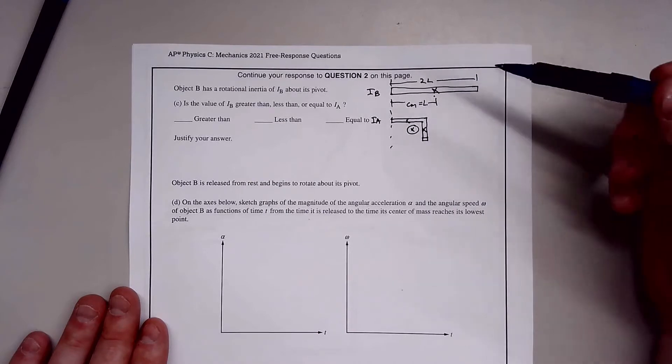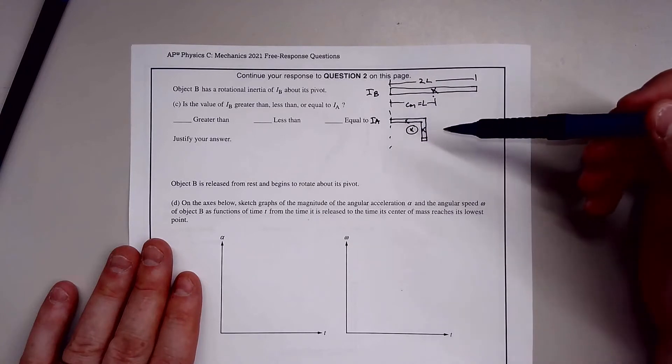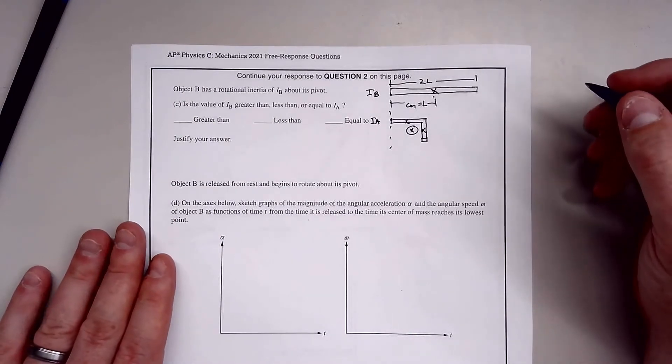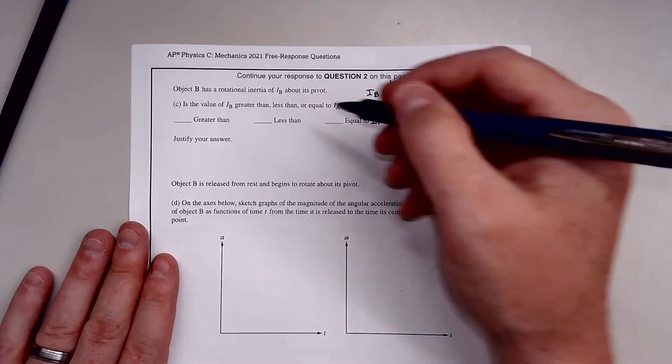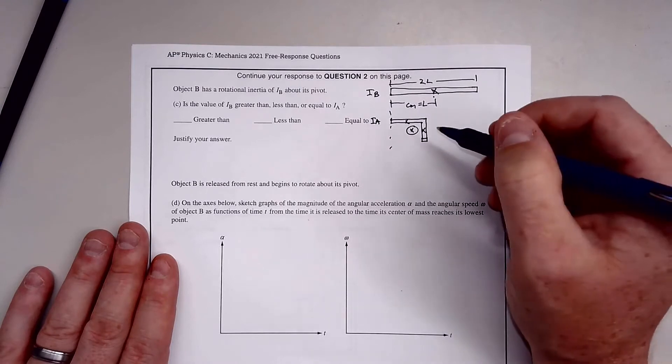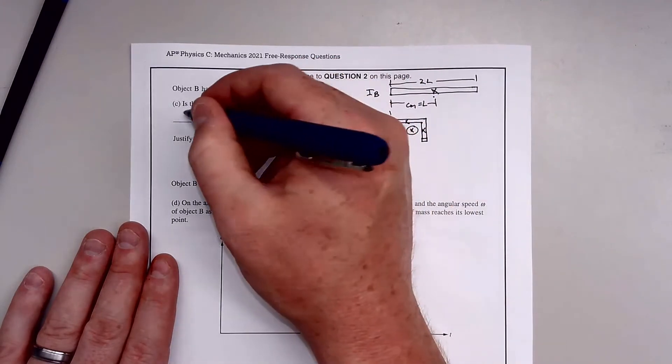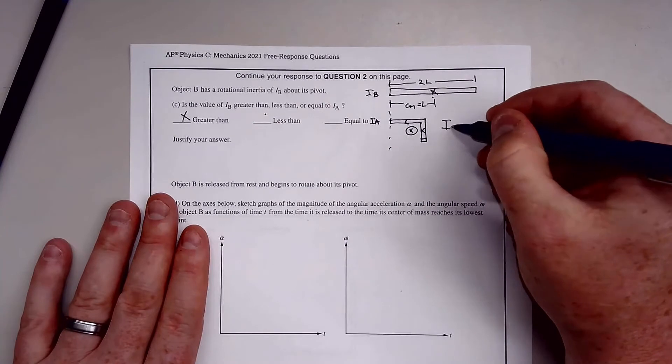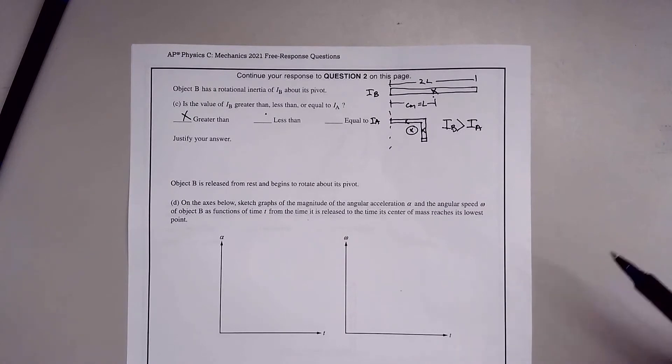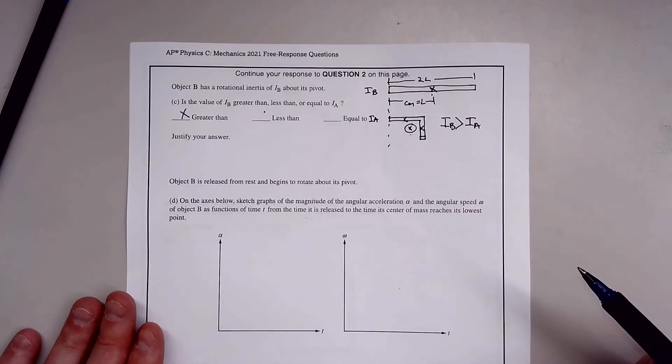What's interesting is, if you think about it, which one has mass concentrated towards the center? For I_A, the mass is actually closer to the pivot point. If you look at it like this, I would say I_B is actually greater than I_A.